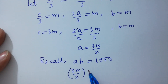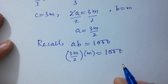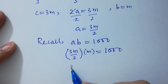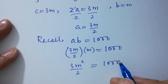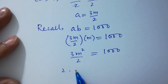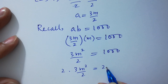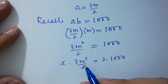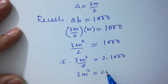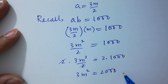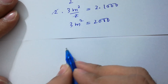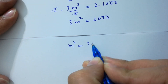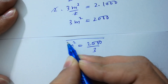Now using BC equals 2000, with B equals M and C equals 3M, we have M times 3M equals 2000, so 3M squared equals 2000. Multiply both sides... wait, we have 3M squared equals 2000, so M squared equals 2000 over 3.